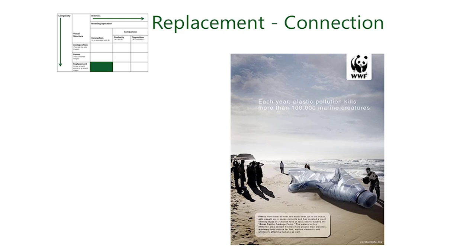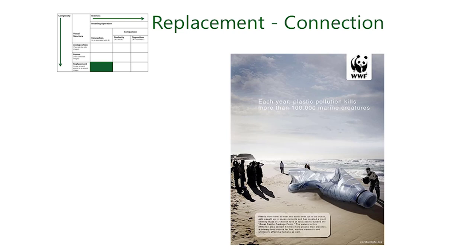This ad uses replacement as visual structure. The over-dimensioned plastic bottle calls to mind a stranded marine mammal through its form, the way it lies on a beach, and the way people gather around and pour water over it. And just like the former ads, this visual rhetorical figure works through connection — the message is not that the stranded mammal is like a plastic bottle. Instead, the image articulates that the marine mammal was killed because it mistook plastic for food.